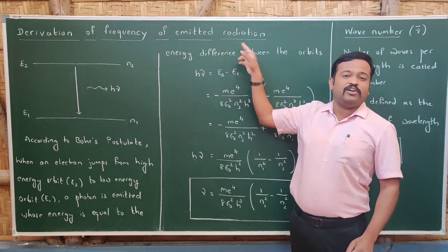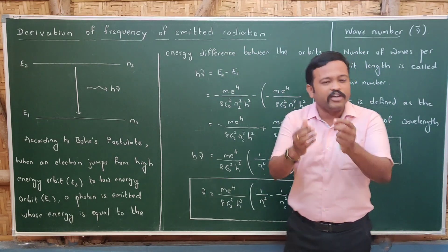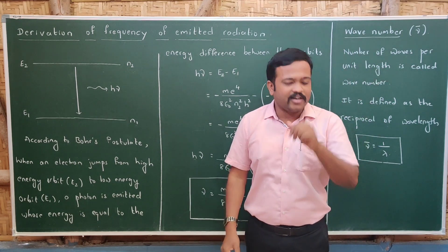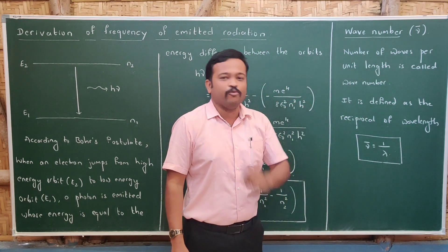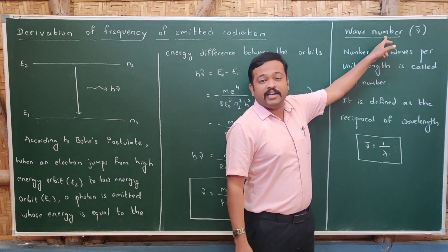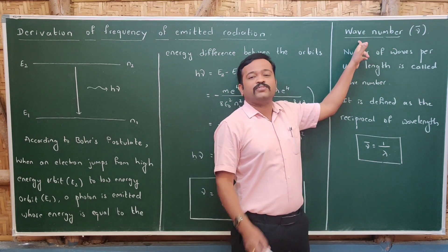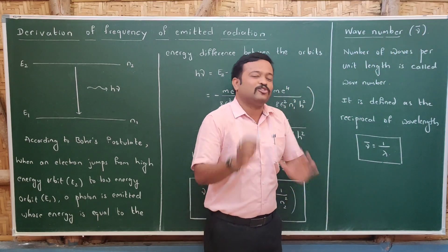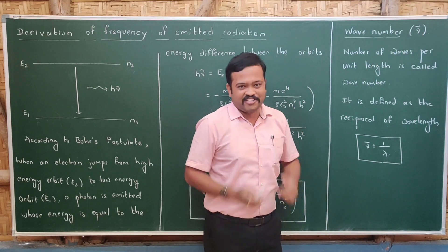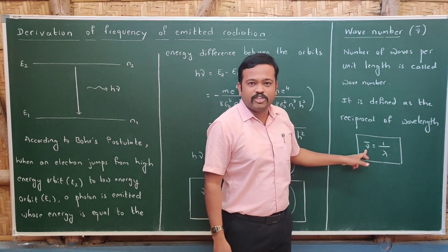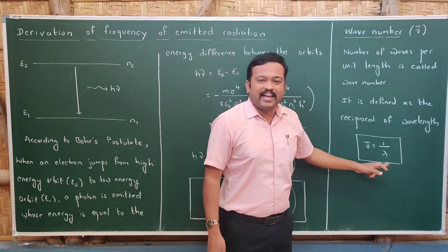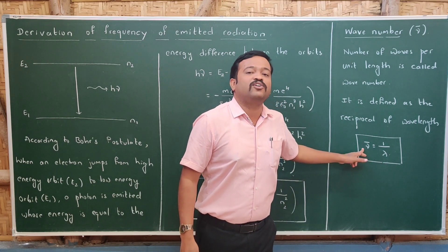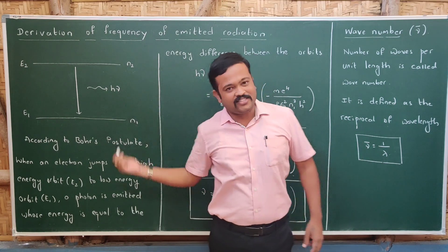Now let us find the expression for wavelength as well as wave number. The wave number, as the name suggests, is the number of waves per unit length. It is denoted by ν-bar and is defined as the reciprocal of wavelength, so ν-bar equals 1/λ.